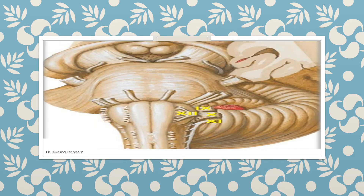This nerve leaves the medulla between the pyramid and the olive, and enters the hypoglossal canal. It passes in the carotid sheath, medial to cranial nerves 9 and 11, and passes between the internal carotid artery and internal jugular vein. It then passes laterally to the internal carotid artery and enters the digastric triangle, deep to the posterior belly of the digastric.